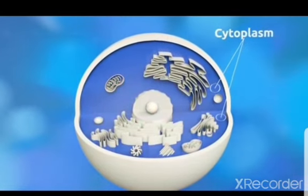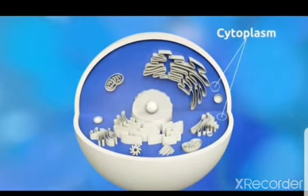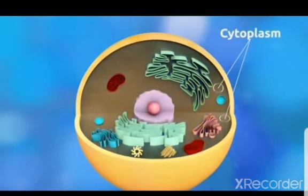The next one is the cytoplasm. Cytoplasm is a jelly-like substance and contains all the parts of the cell.